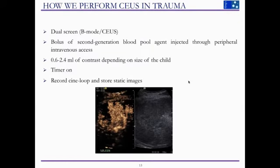How do we perform CEUS in our center? We always have a dual screen. We inject a bolus of SonoVue through a peripheral IV access. The dose range in children is normally between 0.6 and 2.4 milliliters depending on the size of the child. We always have our timer on and we record and store static images in the meantime.